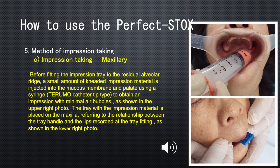Method of Impression Taking. C. Impression Taking — Maxillary: Before fitting the impression tray to the residual alveolar ridge, a small amount of impression material is injected into the mucous membrane and palate using a syringe (Terumo catheter tip type), to obtain an impression with minimal air bubbles, as shown in the upper right photo. The tray with the impression material is then placed on the maxilla, referring to the relationship between the tray handle and the lips recorded at the tray fitting, as shown in the lower right photo.